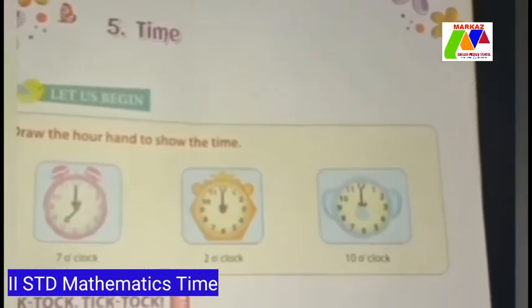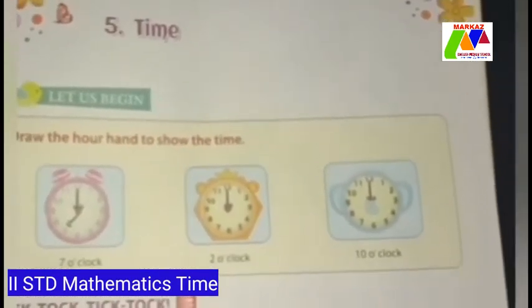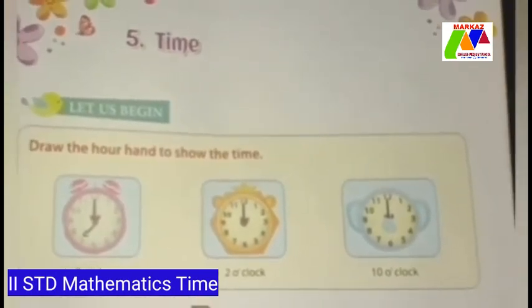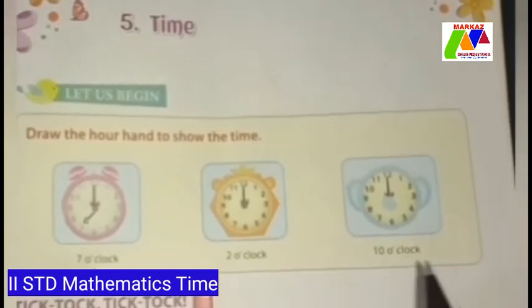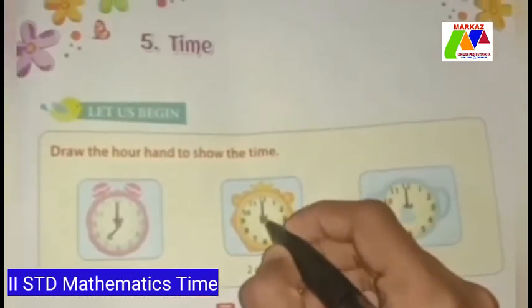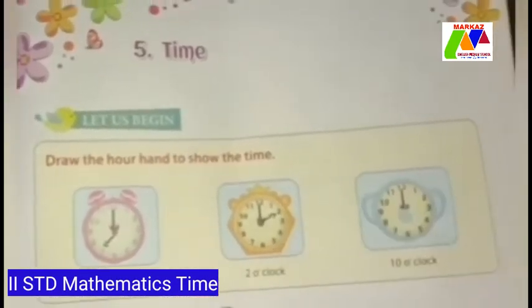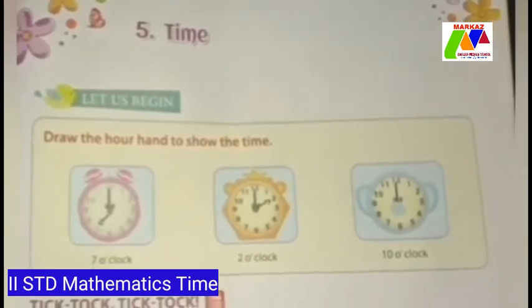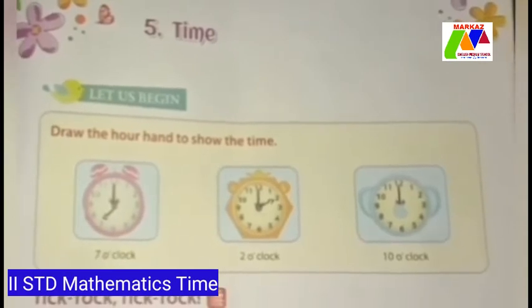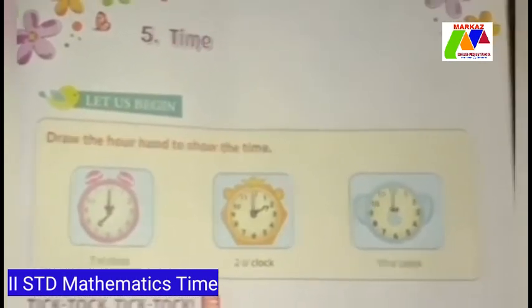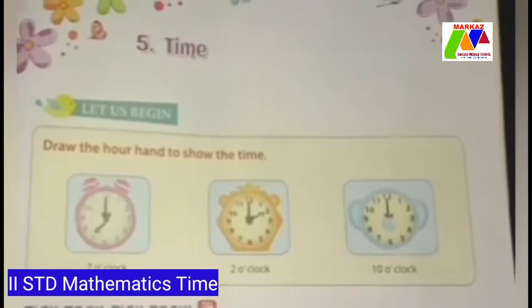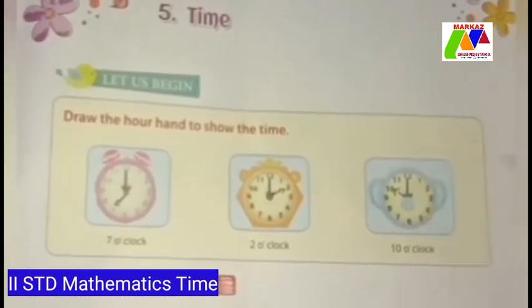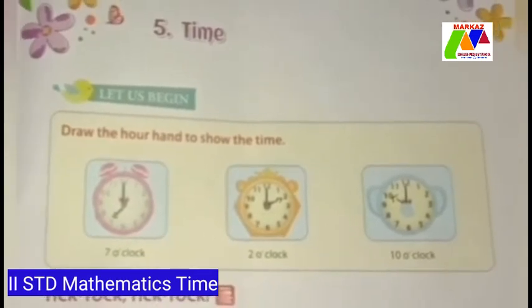In the second clock, the minute hand is on 12. To show the time 2 o'clock, we should draw an hour hand on 2. Next, the minute hand is on 12. To show the time 10 o'clock, we should draw an hour hand on 10. Now the time is 10 o'clock.